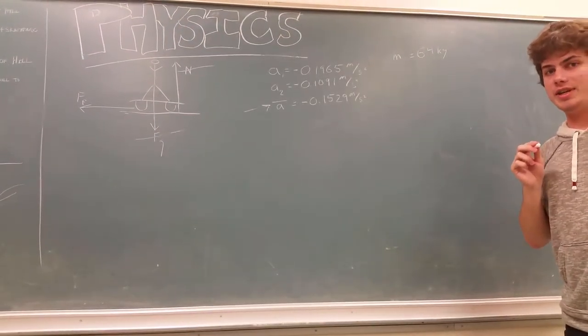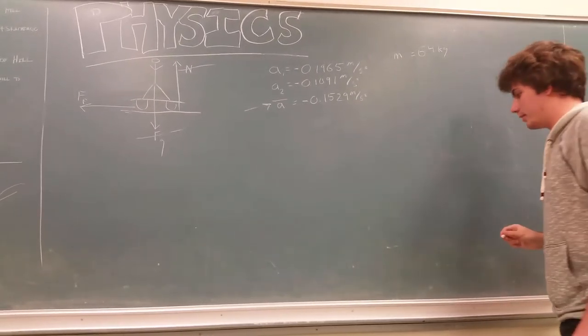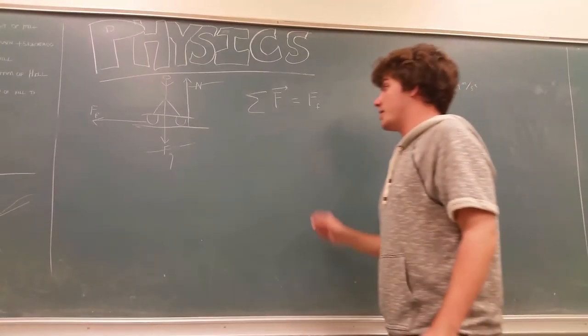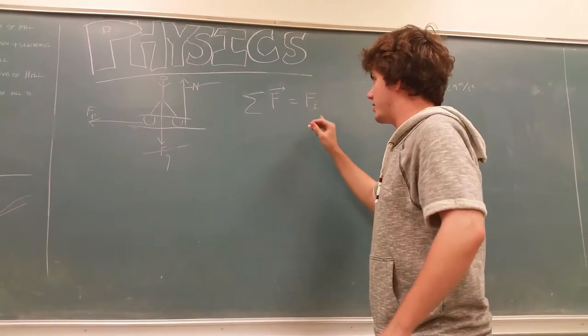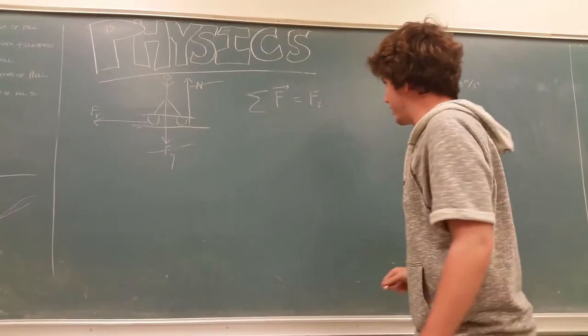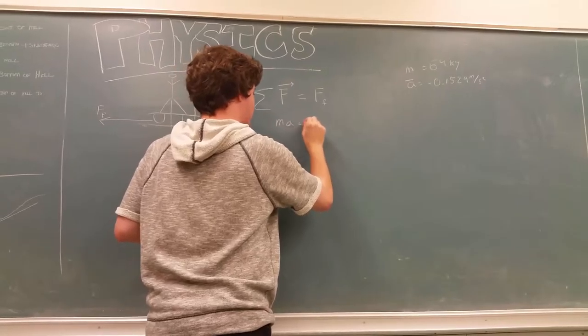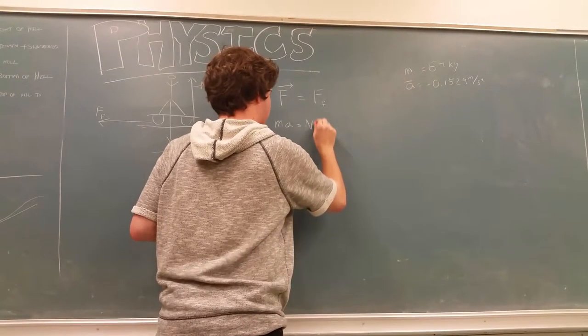We also looked at the mass of Jensen and his skateboard. Together, they are 64 kilograms. So, the sum of forces on Jensen in this video is going to be only the force of friction as gravity and normal force cancel each other out. So, from this we know that mass times acceleration equals the normal force times the coefficient of friction.